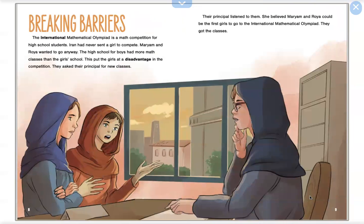Breaking Barriers. The International Mathematical Olympiad is a math competition for high school students. Iran had never sent a girl to compete. Maryam and Roya wanted to go anyway. The high school for boys had more math classes than the girls' school. This put the girls at a disadvantage in the competition. They asked their principal for new classes. Their principal listened to them. She believed Maryam and Roya could be the first girls to go to the International Mathematical Olympiad. They got the classes.